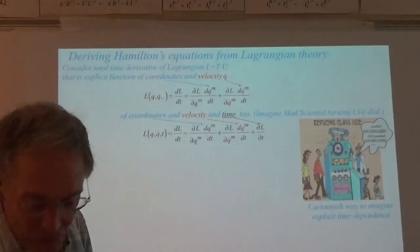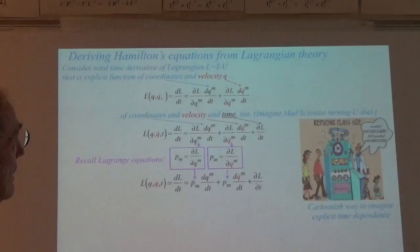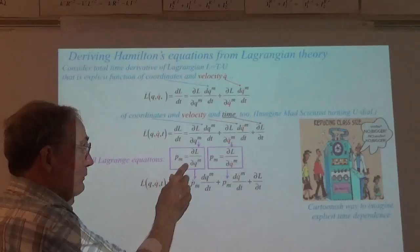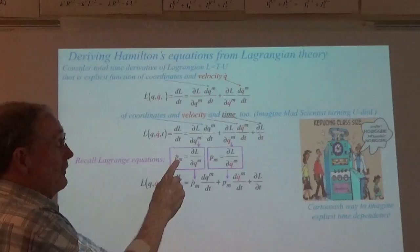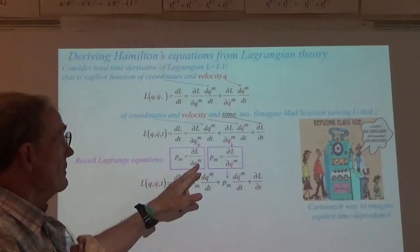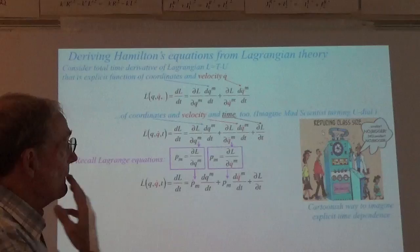Our Lagrange equations are very elegant. Here is the second Lagrange equation, in which we're admitting that P-dot is not zero — that is, we're admitting that the momentum wasn't conserved. And if it isn't conserved, then you need to know what the partial derivative of L with respect to coordinate component M is. This is the first Lagrange equation that we derived by geometry.